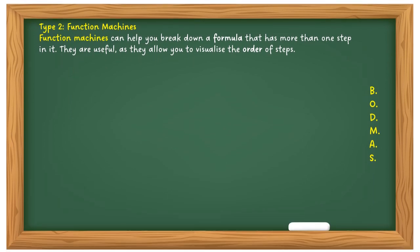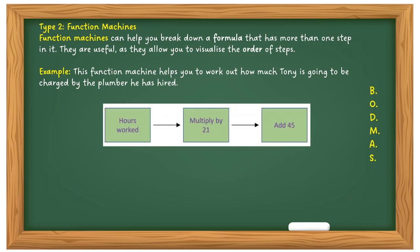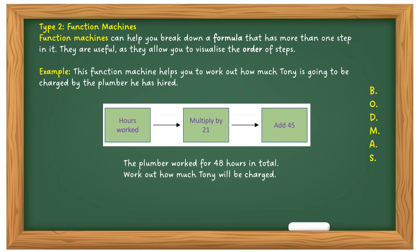Now let's look at function machines. Function machines help you break down a formula that has more than one step — they allow you to visualise the order of steps, so really it's a visual presentation of BODMAS. The function machine works out how much Tony will be charged by a plumber. However many hours worked you put in, then multiply by 20 and add 45. The plumber worked 48 hours — 48 times 20 plus 45 gives £1,053.